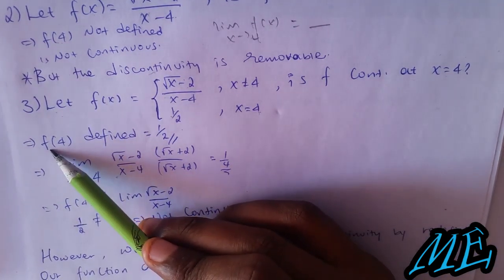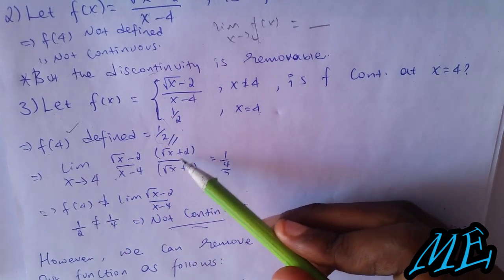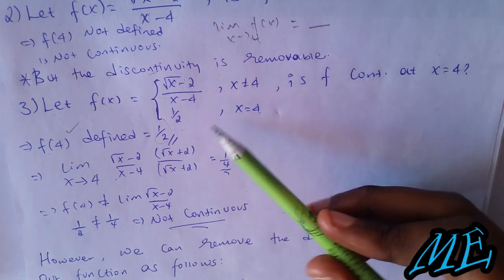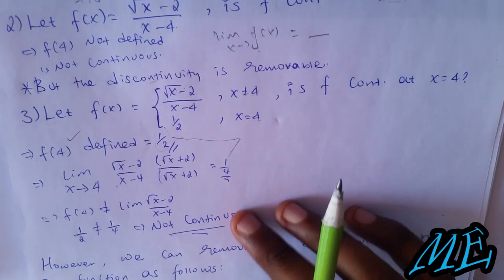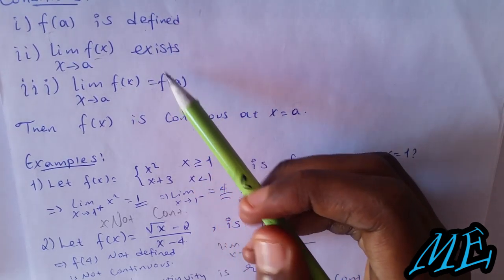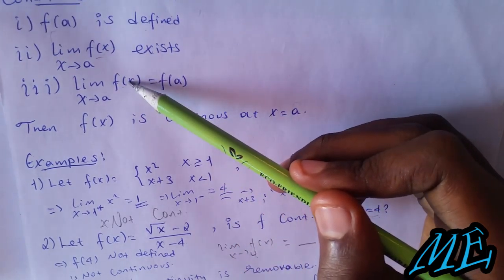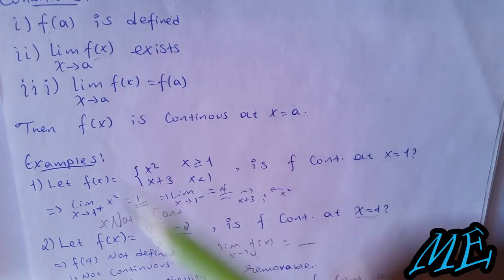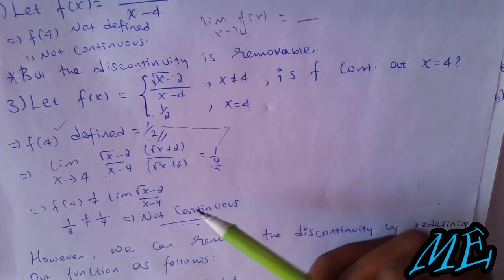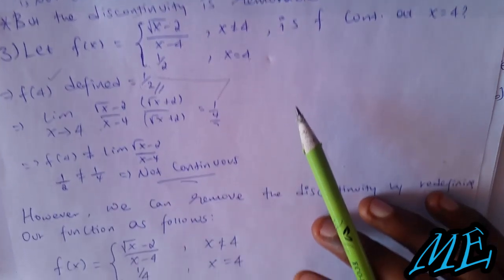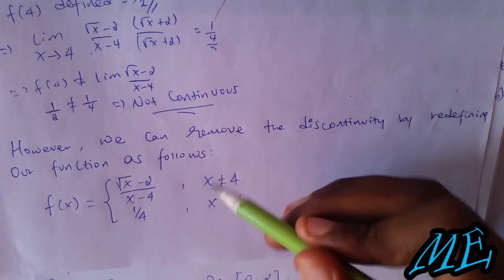When we define f(4) = 1/2, and compute the limit as x approaches 4 using rationalization, we get 1/4. Wait, let me recalculate... actually the limit equals 1/4, and if we set the value equal, the limit exists and equals the value.